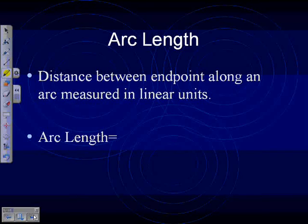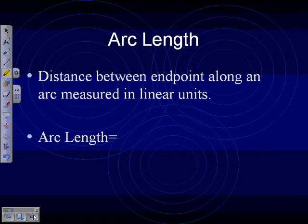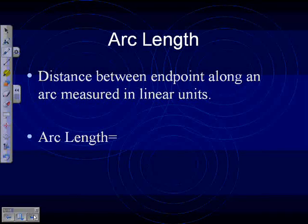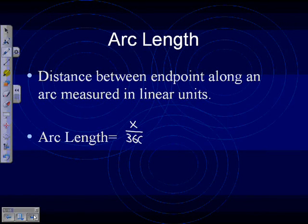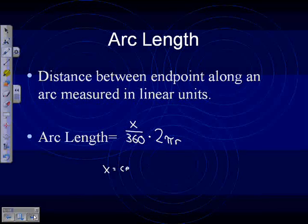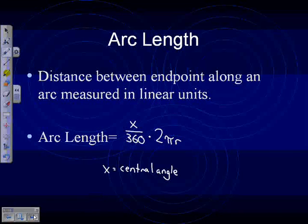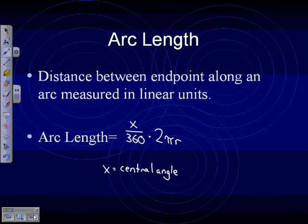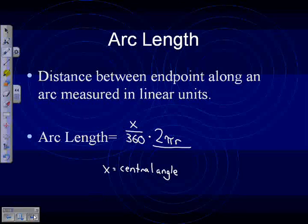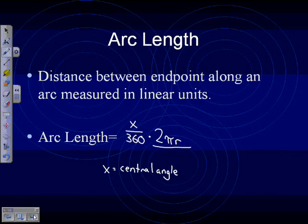So make sure you get that distinction between those two. They ask for measure, it's in degrees. They ask for length, it's in regular old units that you'd use for a line. And our formula for this is x over 360 times 2πr. In that case, x equals the central angle. Can you figure out where that formula comes from by looking at it? Circumference. And what's this? Percentage is a good term there. That's how much of a circle you have.